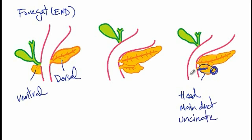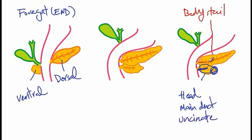On the other hand, the dorsal bud gives rise to the body, the tail, as well as the accessory duct of the pancreas.